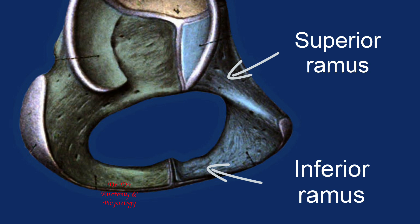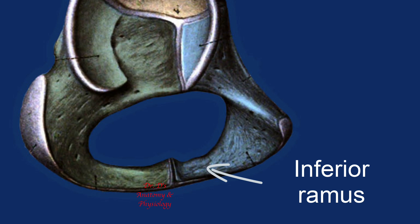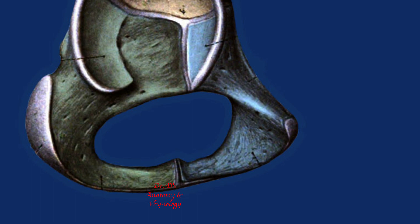The word ramus means branch, and this term is encountered in many other places in anatomy. The superior ramus extends to the acetabulum and forms the superior wall of the obturator foramen. The inferior ramus fuses with a ramus from the ischium to form the inferior wall of the foramen.